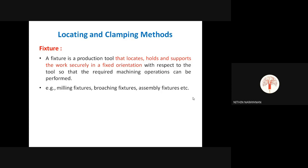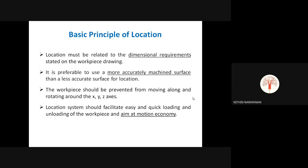A fixture locates and supports the workpiece securely. Jigs also clamp or support the workpiece, but additionally they guide the cutting tool. The key difference: if asked which device locates the workpiece AND guides the cutting tool, the answer is JIG. Both jigs and fixtures are clamping devices, but jigs also guide the tool.